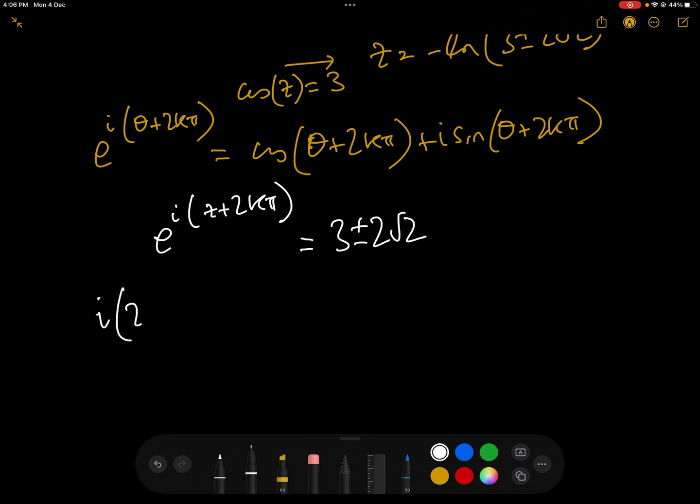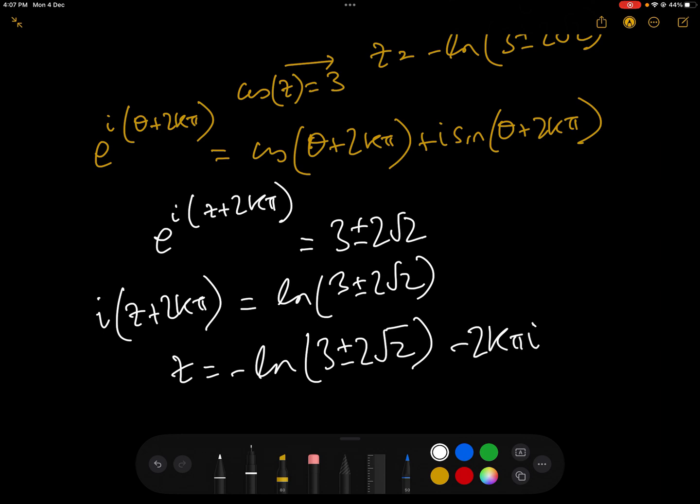And then taking logs, we have i(z + 2kπ) = log(3 ± 2√2). And so therefore, z = i·log(3 ± 2√2) - 2kπi,